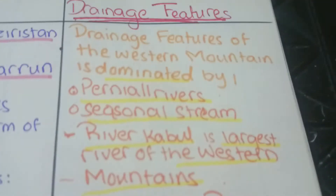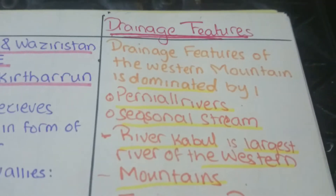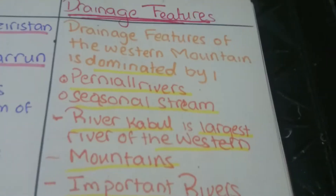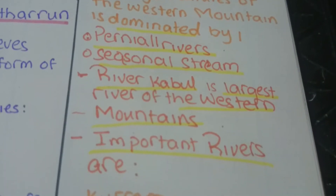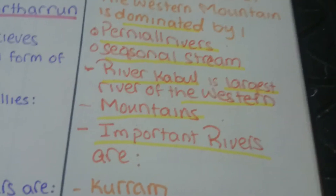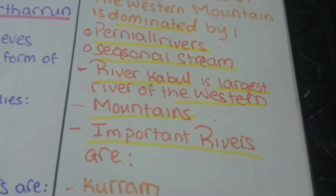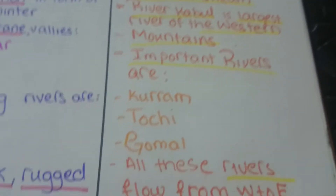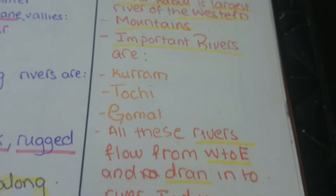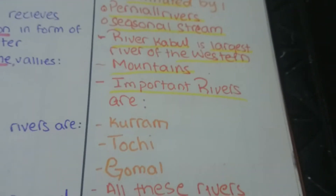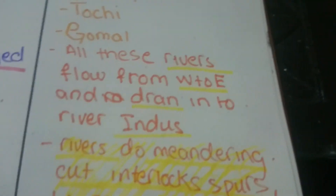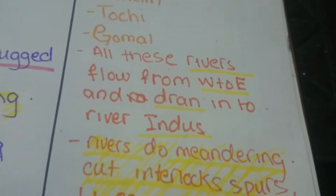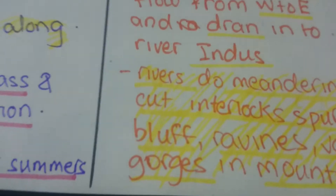Drainage features of the Western Mountains are dominated by perennial rivers and seasonal streams. The River Kabul is the largest river here. Important rivers are Kuram, Tochi, and Gomal. All these rivers flow from west to east and drain into the Indus.